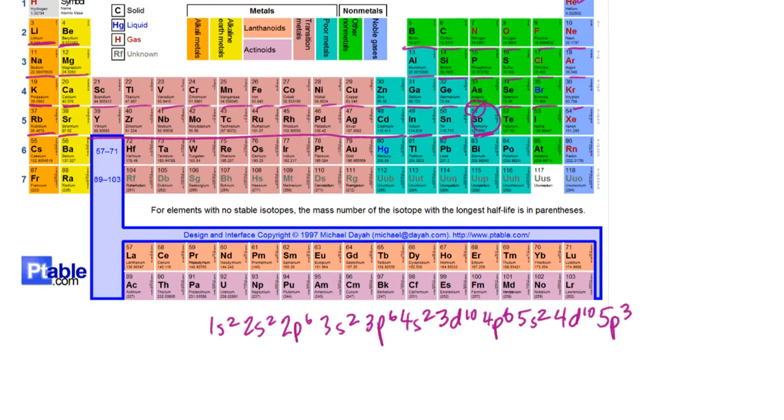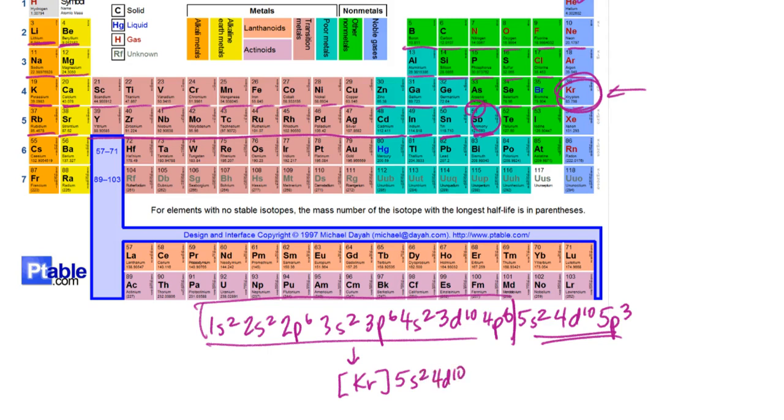Now as always, I could have used noble gas notation or abbreviated electron configuration notation, and so in order to do that, I'm going to find the noble gas that precedes antimony. That would be krypton. Krypton ends the fourth period. That means that all of the electron configuration through 4p6, this piece right here, can be condensed down to krypton's electron configuration. So I'll put krypton in square brackets, and then the remainder of the electron configuration is placed just to the right of that. And then that would be the noble gas notation for antimony.